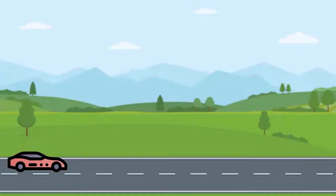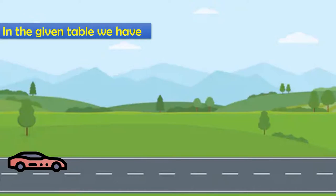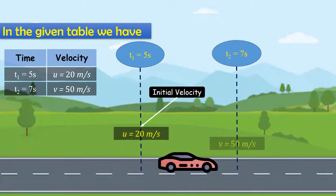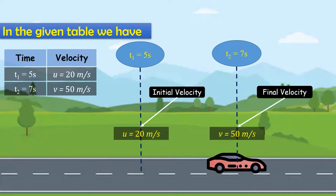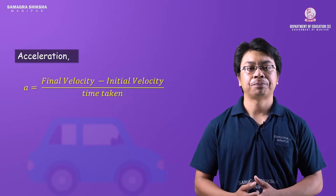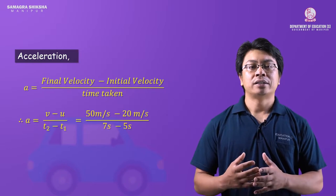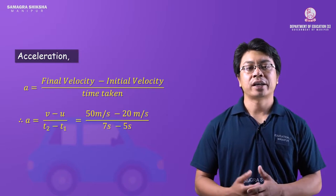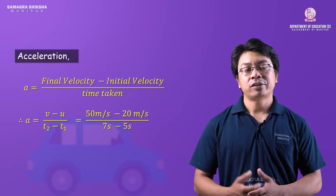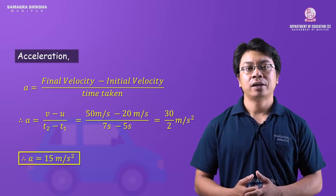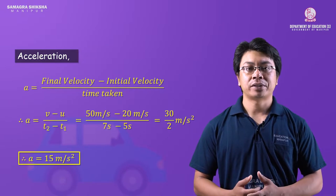Working example: at time t1 = 5 seconds the velocity is 20 m/s, and at time t2 = 7 seconds the velocity is 50 m/s. Acceleration = (v − u) / (t2 − t1) = (50 − 20) / (7 − 5) = 30 / 2 = 15 meters per second squared.